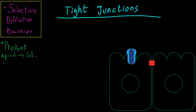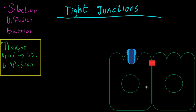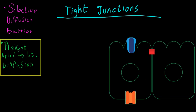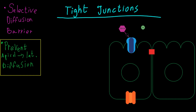The second function of tight junctions is to prevent certain membrane proteins from diffusing from the apical side of the cell to the basal or lateral side. For example, intestinal epithelial cells absorb nutrients and various molecules, one of which is glucose. The cell must take in glucose from the apical side and release it from the basal side. To uptake glucose, the cell uses a transporter called sodium-glucose symport, and to release glucose from the basal side it uses a transporter called glucose uniport.